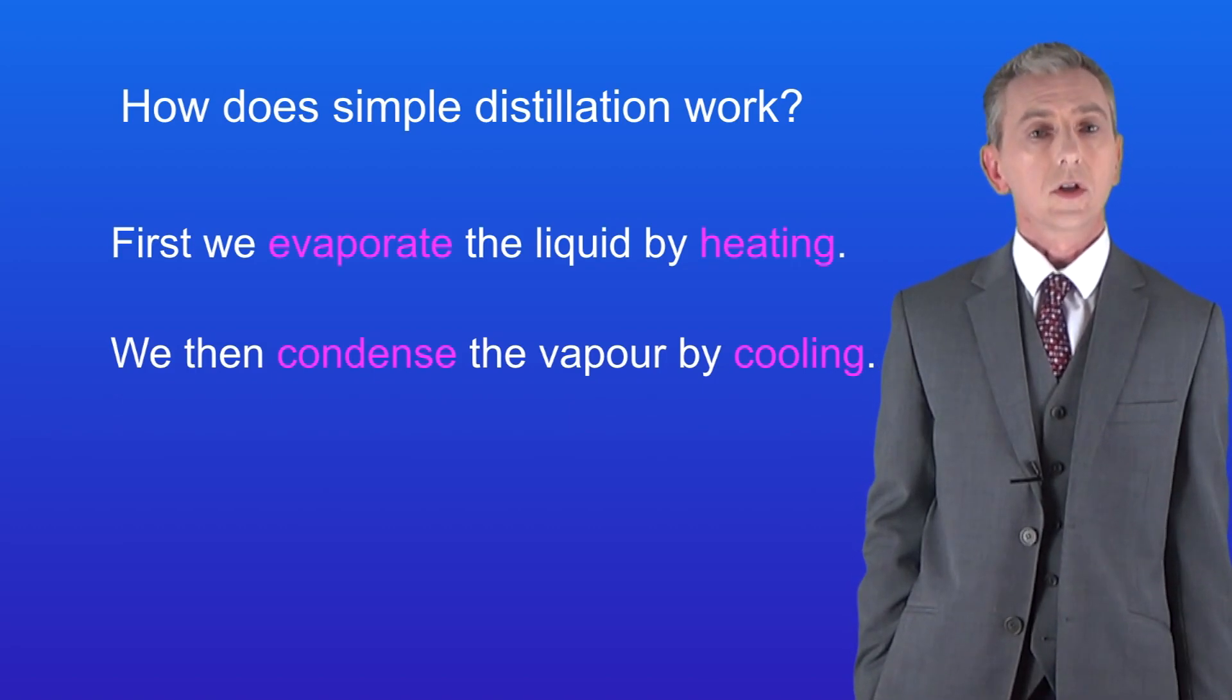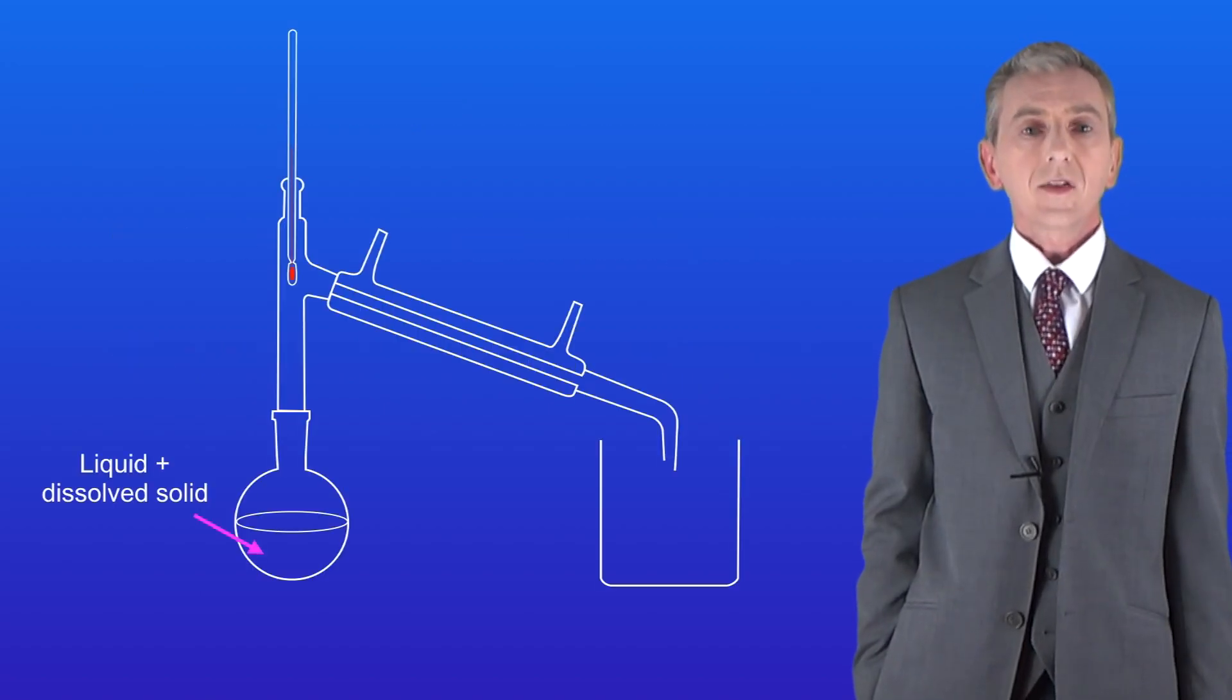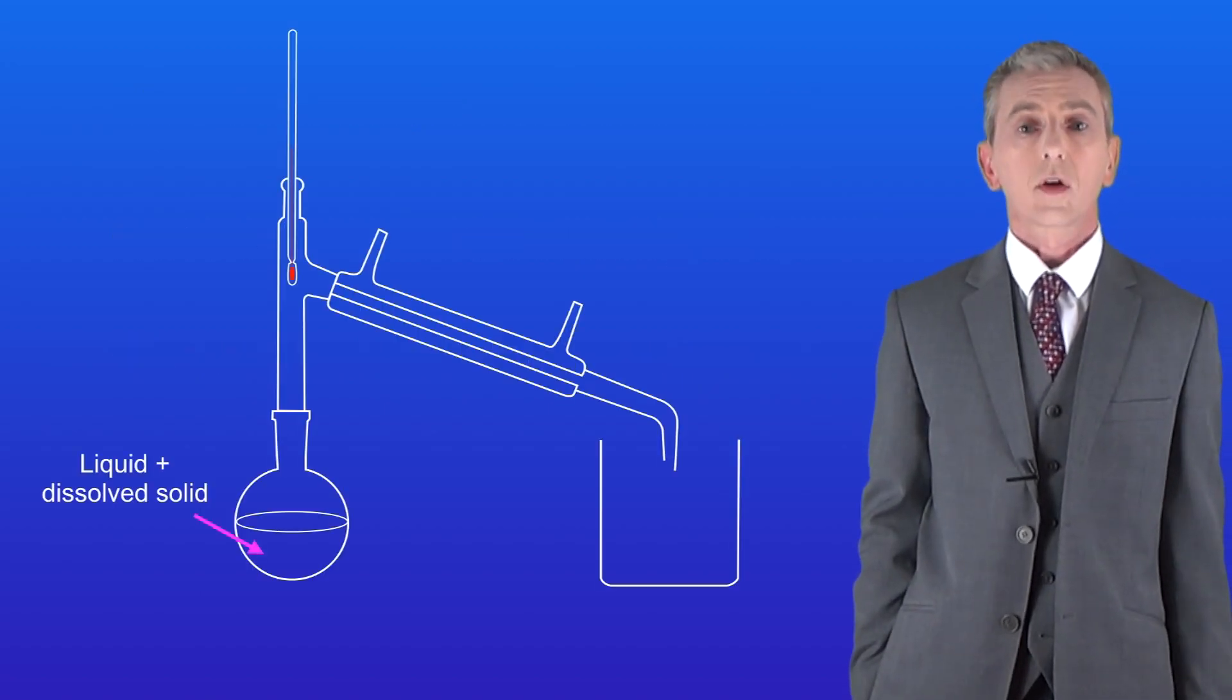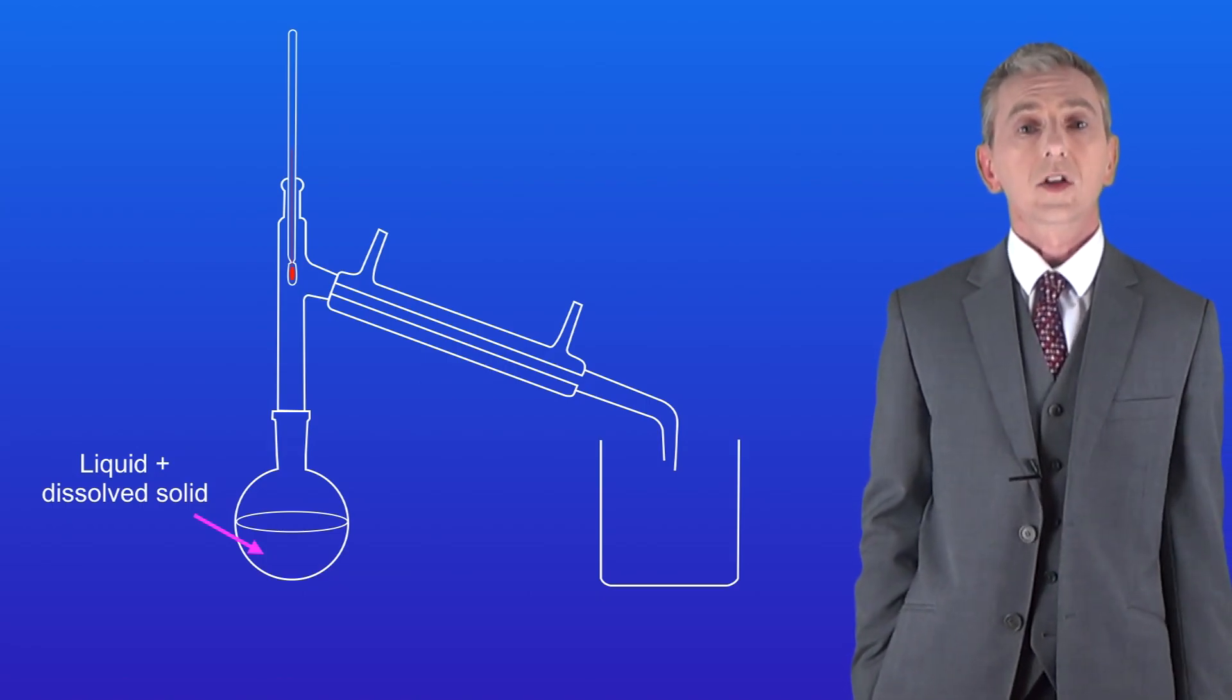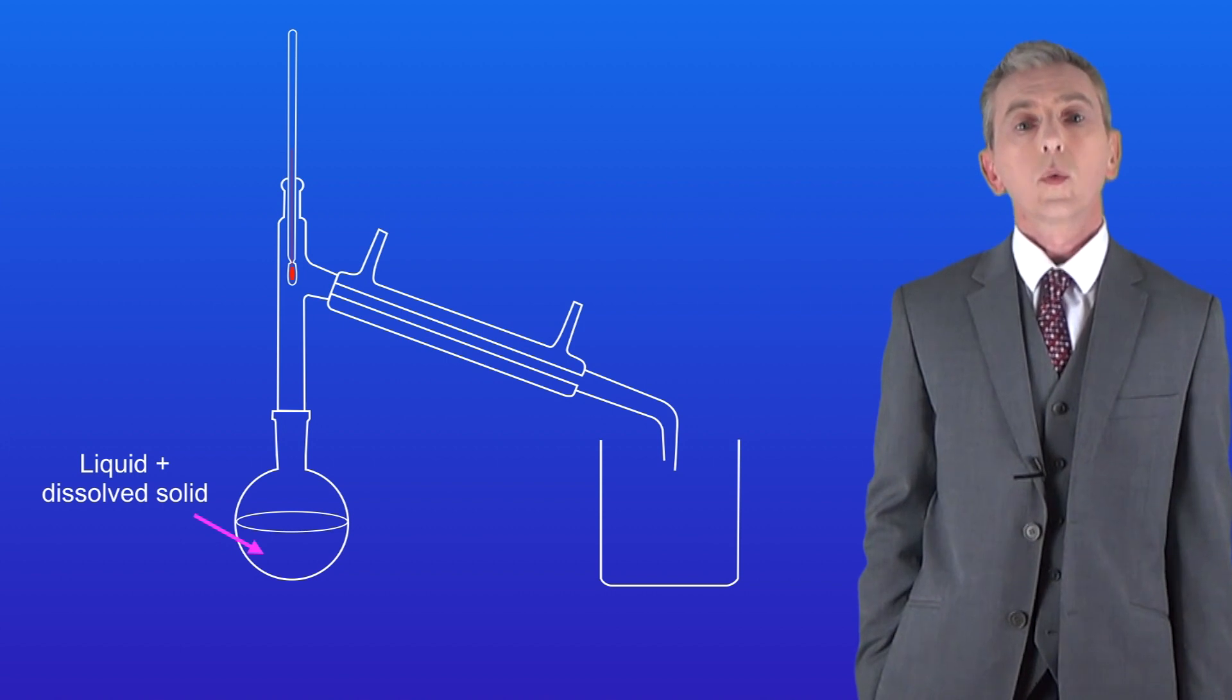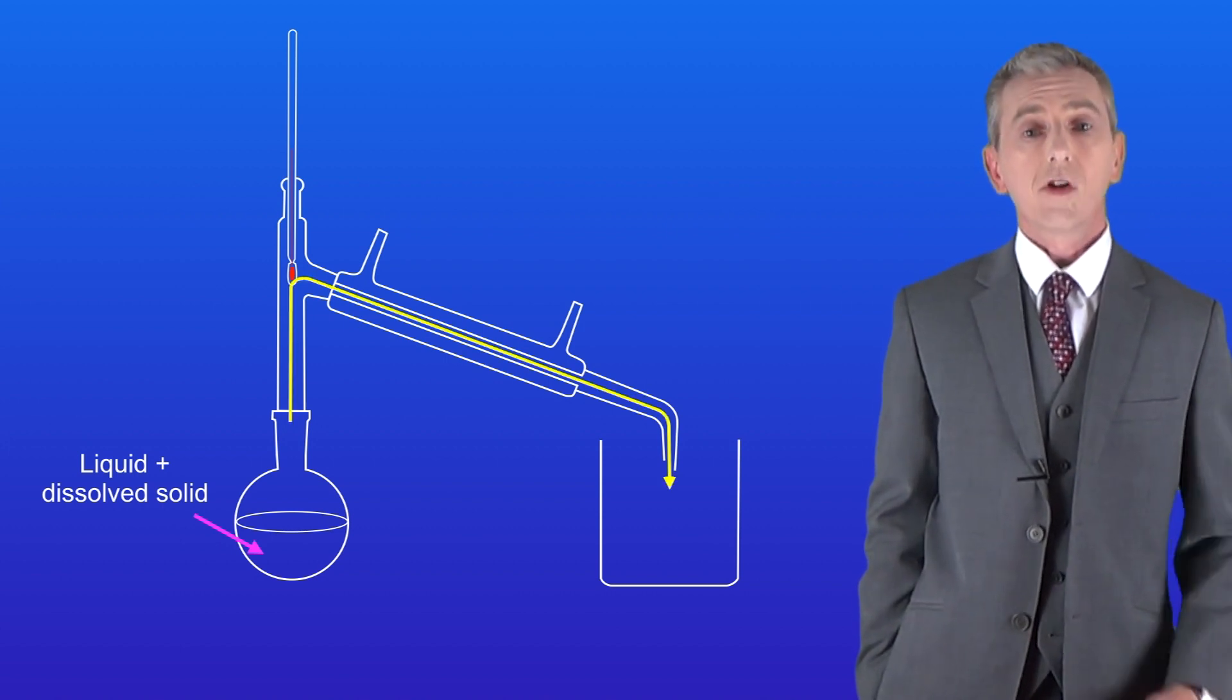Let's look at the apparatus that we use to do this. We place our solution with the liquid and the dissolved solid in this flask here. This flask is now connected to a continuous glass tube which I'm showing you with this yellow arrow here.